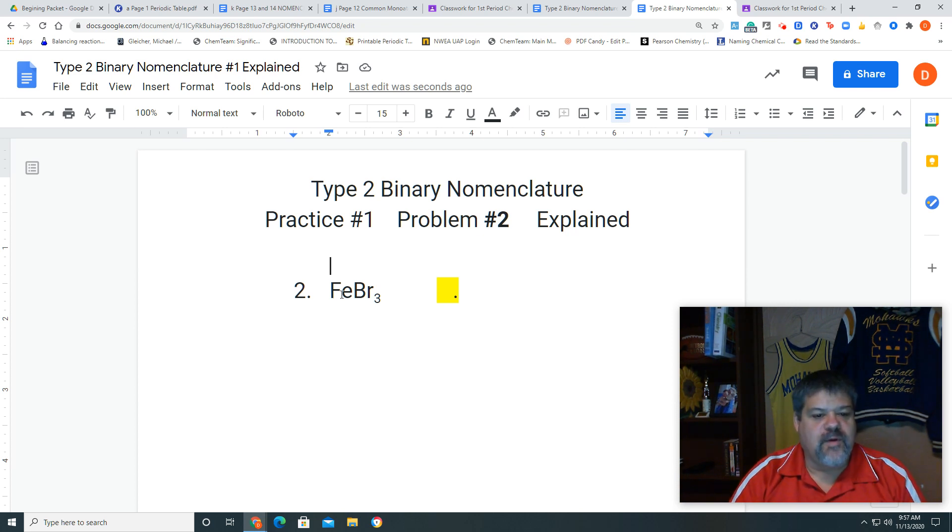So we have two elements here, Fe and Br. If we know what they stand for, Fe stands for iron and Br stands for bromine.